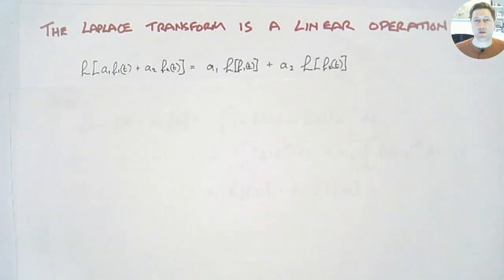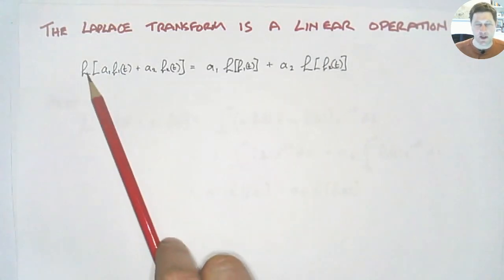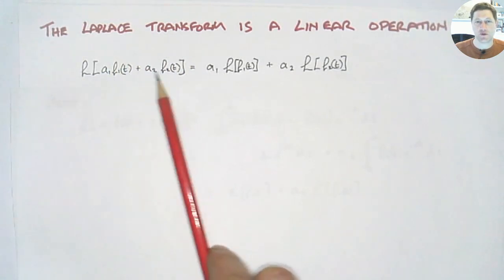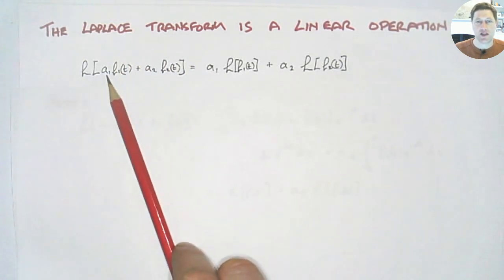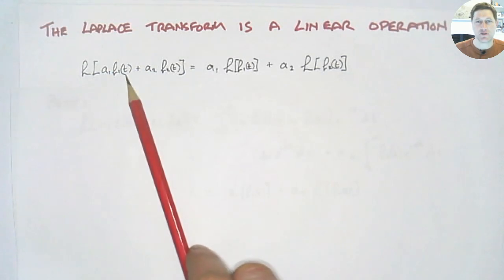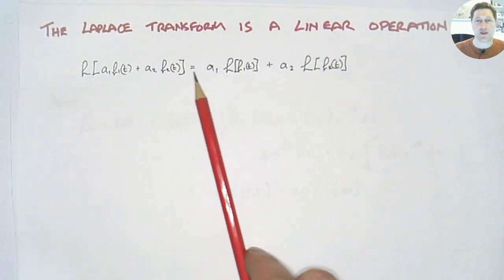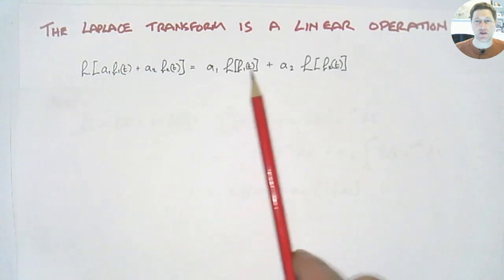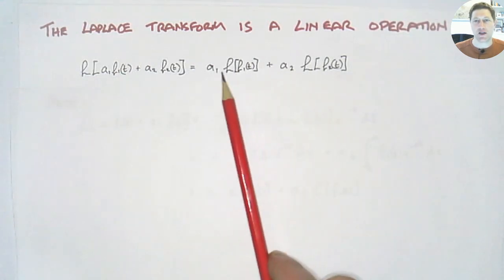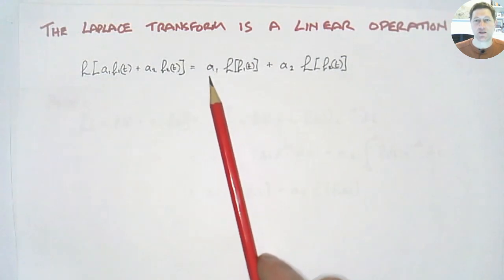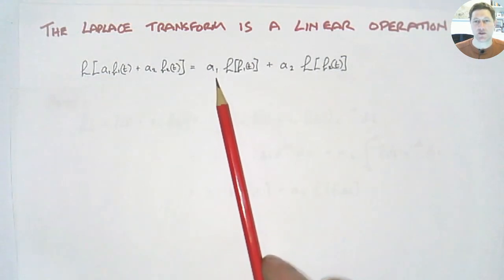And a third reason why they're really effective is that they are a linear operation. So a linear operation means this. If we have a function that we want to take the Laplace transform of where our function involves a sum of two different things, and it involves the product of a function with a constant, it means that we can separate all of this out very neatly. So the sum just becomes two sums and the constants can be taken outside of the Laplace transform. So we can simplify and we can manipulate Laplace transforms very easily.